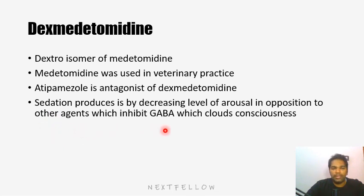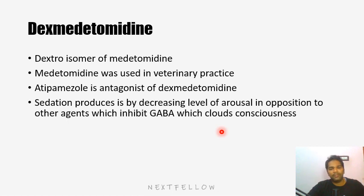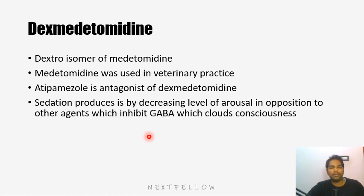Atipamezole is an antagonist of dexmedetomidine. Whenever there is toxicity or accidental overdose of dexmedetomidine, we can use atipamezole to antagonize its actions. Sedation produced by dexmedetomidine is by decreasing the level of arousal — the pontine nucleus is mainly responsible for arousal. By suppressing the sympathetic nervous system, the patient becomes less aroused and less vigilant, and the sleep is very natural. In contrast, GABA-A agonists like midazolam, diazepam, and propofol cloud consciousness. Alpha-2 agonists produce natural sleep — that is why these drugs are more commonly used in ICU settings.